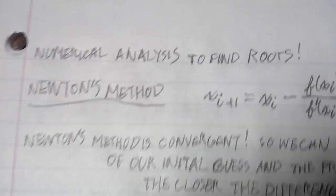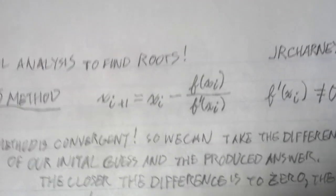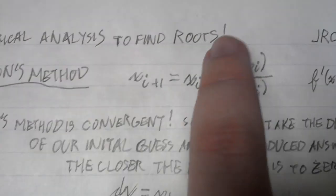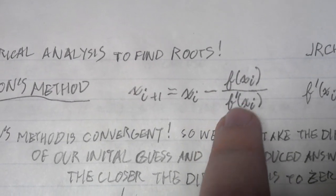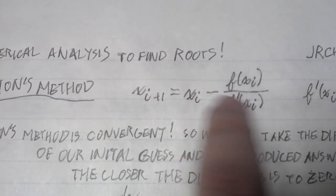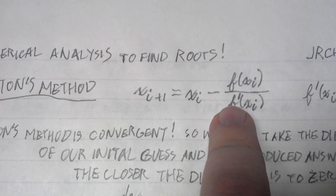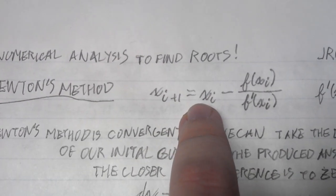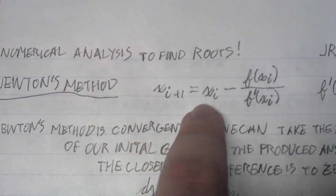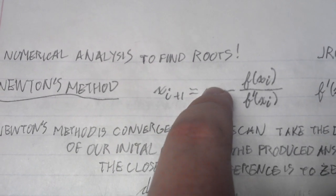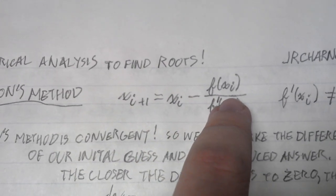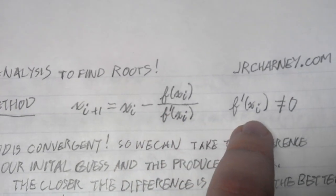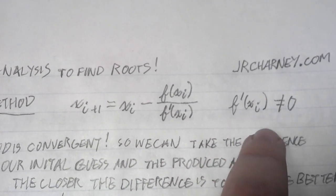This method is a recurring function where we take the function initially and divide it over its derivative. We take an initial guess and generate subsequent recurring answers to find a solution for an equation. Of course, the derivative cannot be zero.